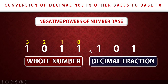Now we are talking about the negative powers. After the decimal point, the first digit will have a negative power of minus one, the second digit will have a negative power of minus two, the third will have minus three, and so forth.